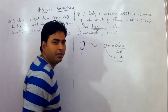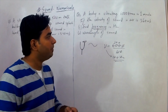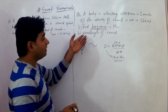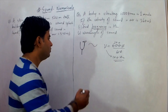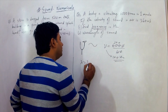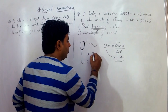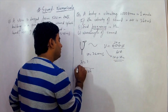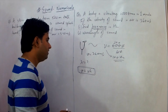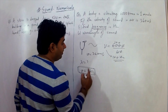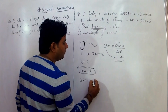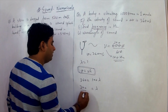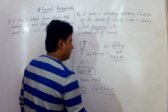Now we have the frequency, and we are given the velocity. We use the formula: v = f × λ, so λ = v / f. Lambda equals 360 divided by 100, which gives us a wavelength of 3.6 meters.